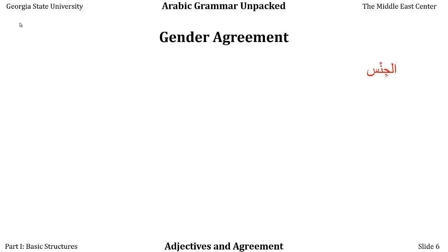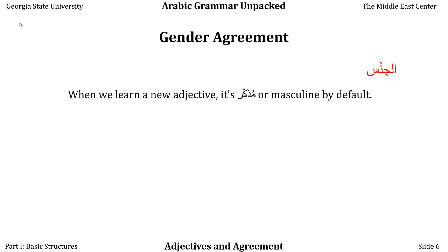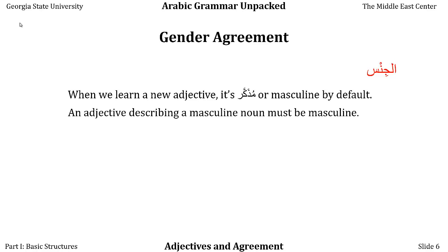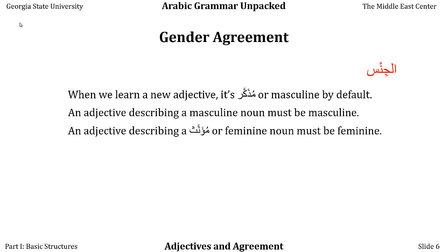Let's begin with gender agreement. The word for gender is jins, which can mean sex, gender, or type. When we learn a new adjective, it is mudhakar, or masculine, by default. An adjective describing a masculine noun — regardless of whether that noun represents a person or a thing — must be masculine. An adjective describing a mu'annath, or feminine noun, must be feminine. This is true in the singular only.